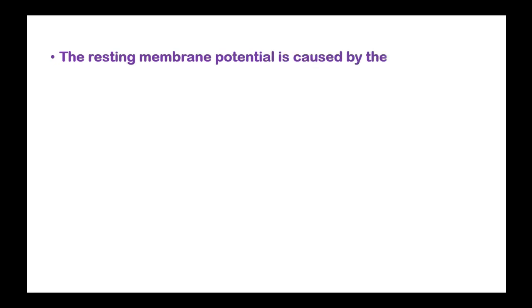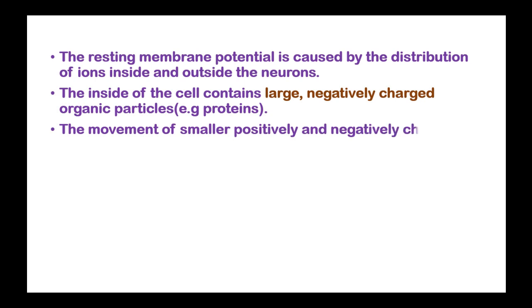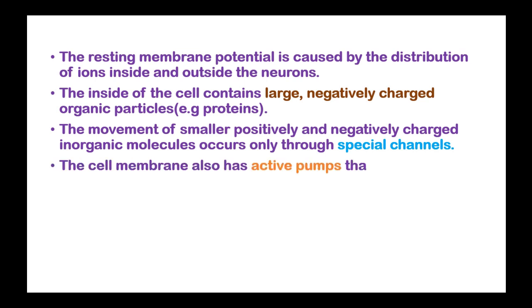The resting membrane potential is caused by distribution of ions inside and outside of the neuron. The inside of the neuron contains large negatively charged organic particles such as proteins, while the outside has positively charged ions. The movement of smaller positively and negatively charged inorganic molecules occurs through special channels, and the cell membrane also has active pumps that use energy to pump ions in and out.